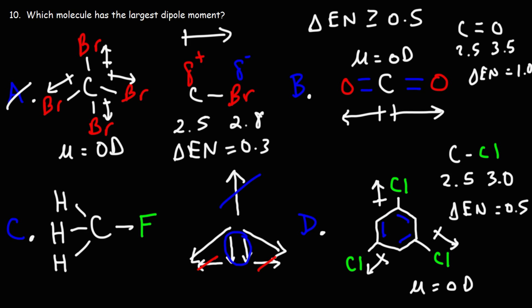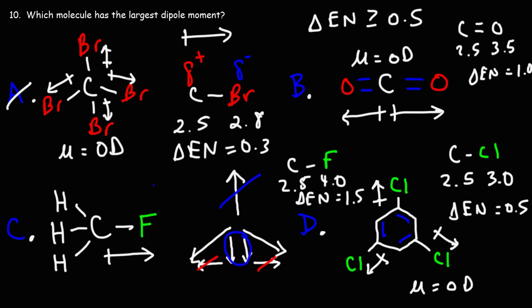Now looking at answer choice C, the carbon-fluorine bond is very polar. Fluorine has an electronegativity value of 4.0, so the electronegativity difference is 1.5 — a highly polar bond. The dipole moment points towards the electronegative fluorine atom. Now looking at the carbon-hydrogen bond, it is considered nonpolar but the electronegativity difference is 0.4, so there is a small dipole moment there.